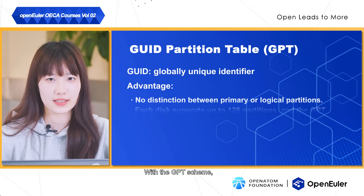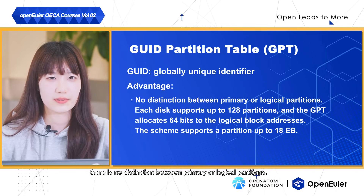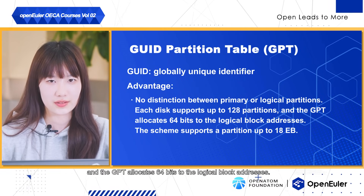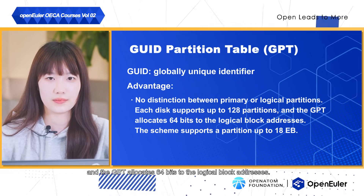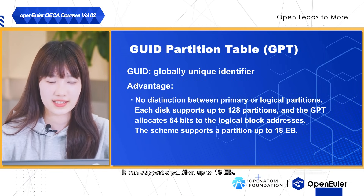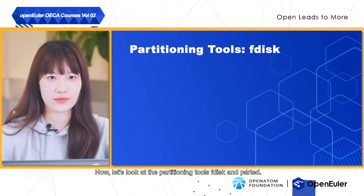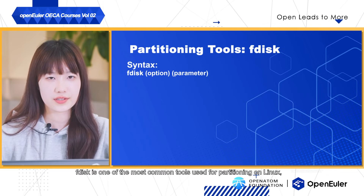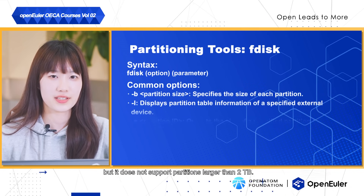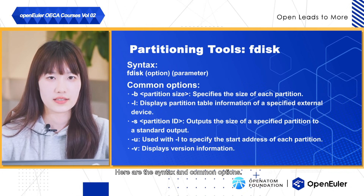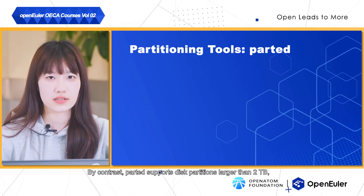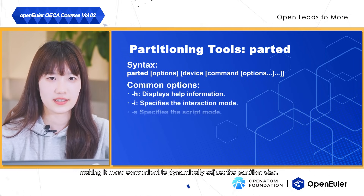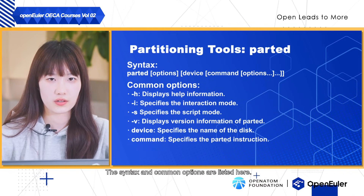With the GPT scheme, there is no distinction between primary or logical partitions. Each disk supports up to 128 partitions, and the GPT allocates 64 bits to its logical block addresses, so it can support partitions up to 18 EB. Now, let's look at the partitioning tools fdisk and parted. fdisk is one of the most common tools used for partitioning on Linux, but it does not support partitions larger than 2 TB. Here are the syntax and common options. By contrast, parted supports disk partitions larger than 2 TB, making it more convenient to dynamically adjust the partition size. The syntax and common options are listed here.